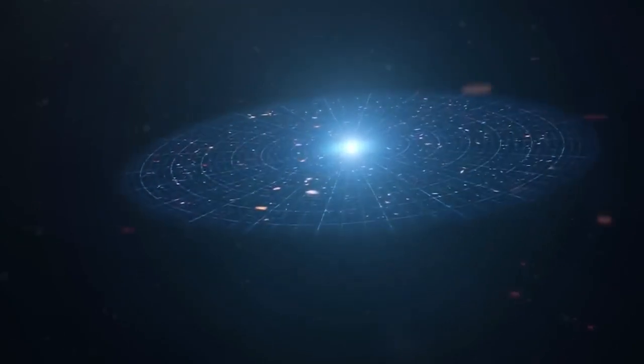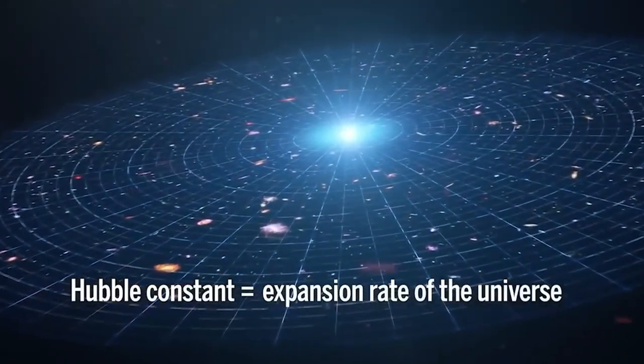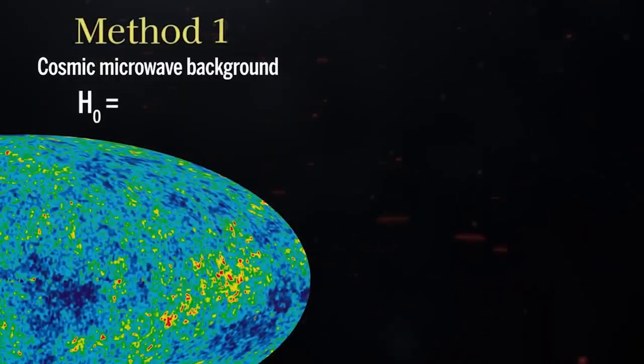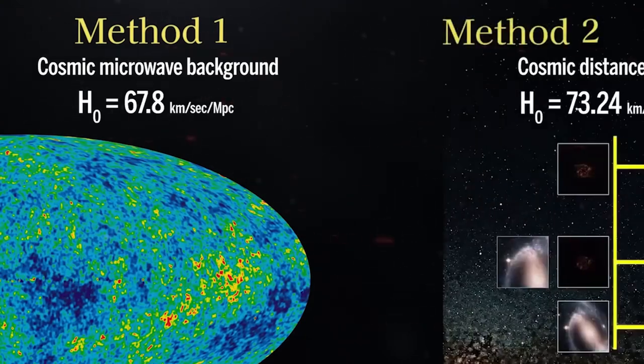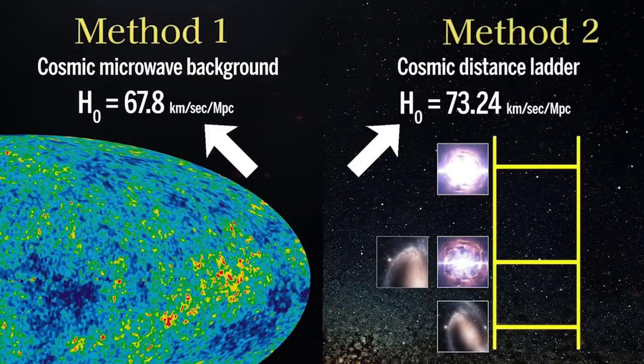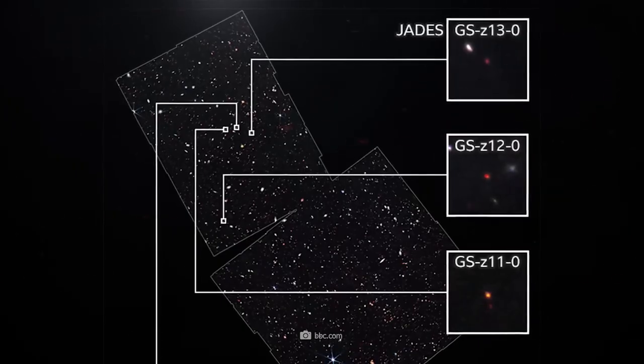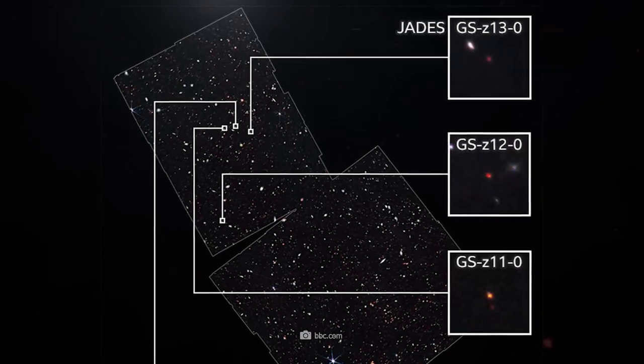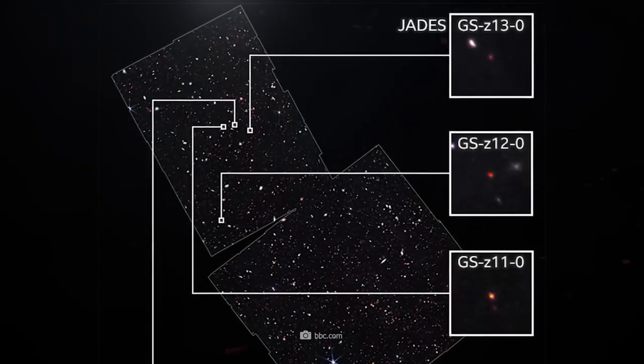Instead, he proposes a new constant that accounts for the evolving coupling constants. This change could help us understand why the early galaxies were smaller than expected. It also offers a more accurate picture of the universe.